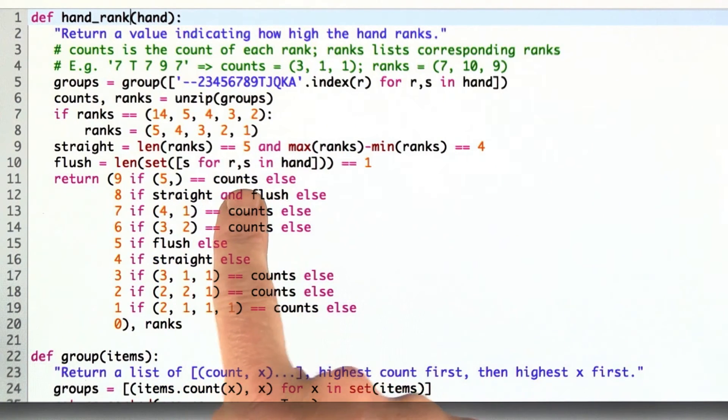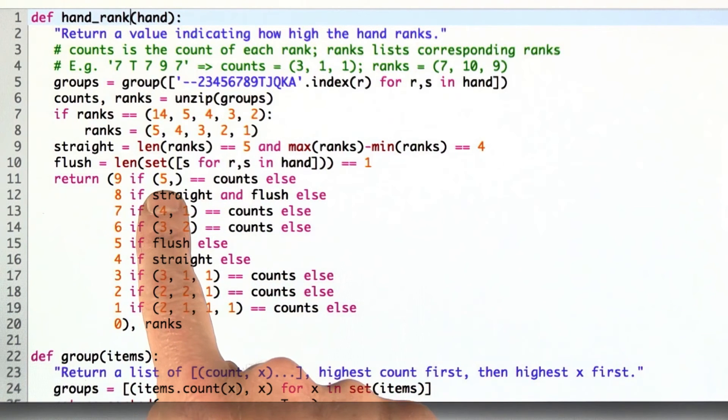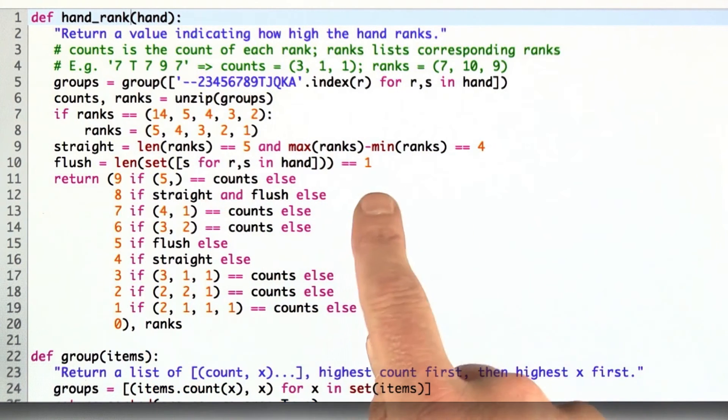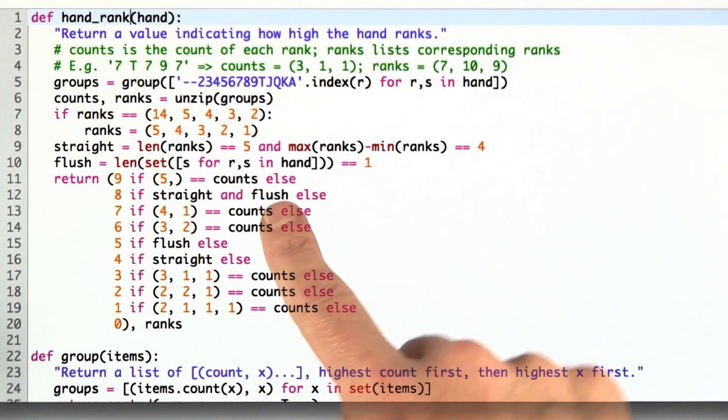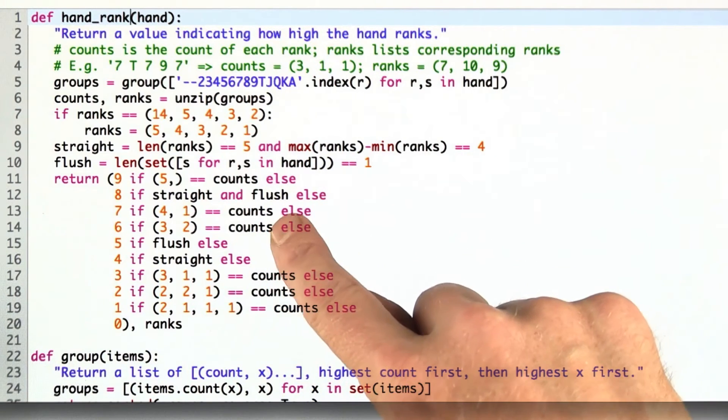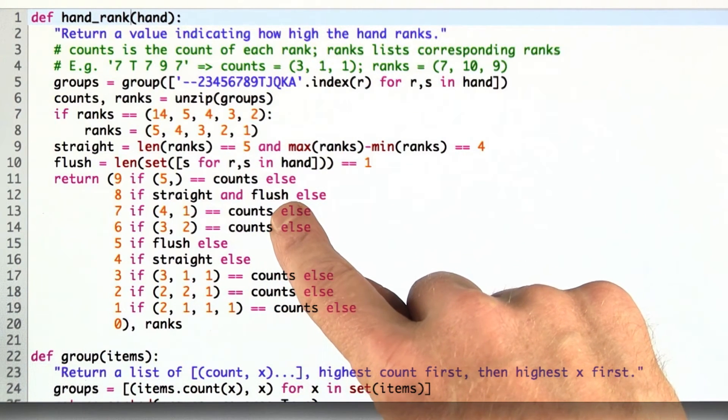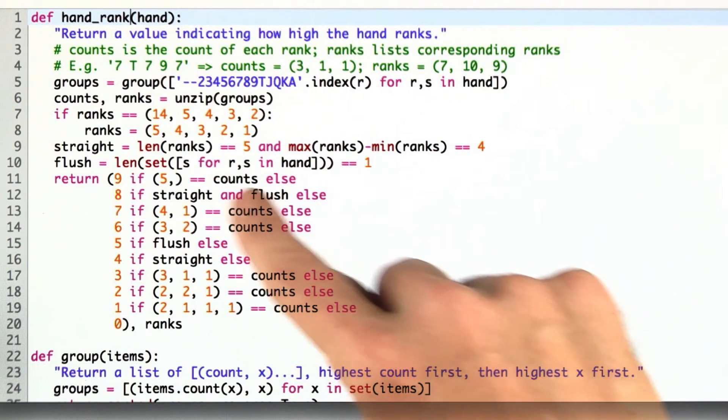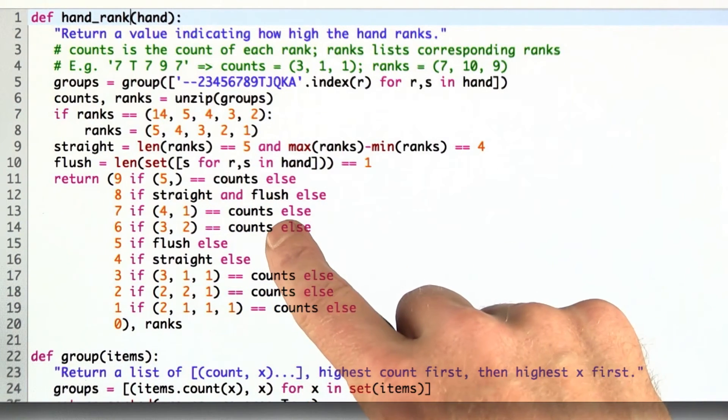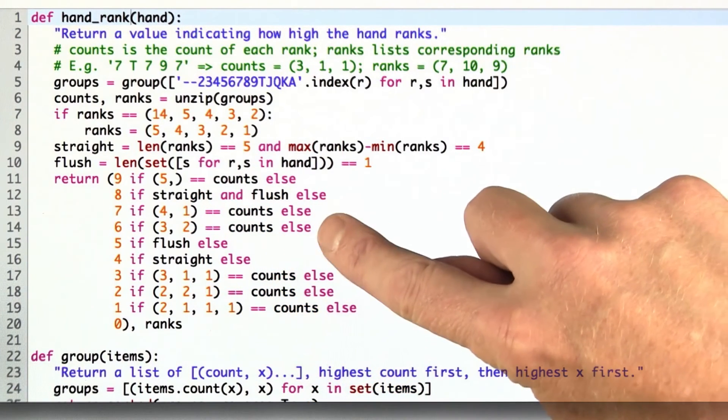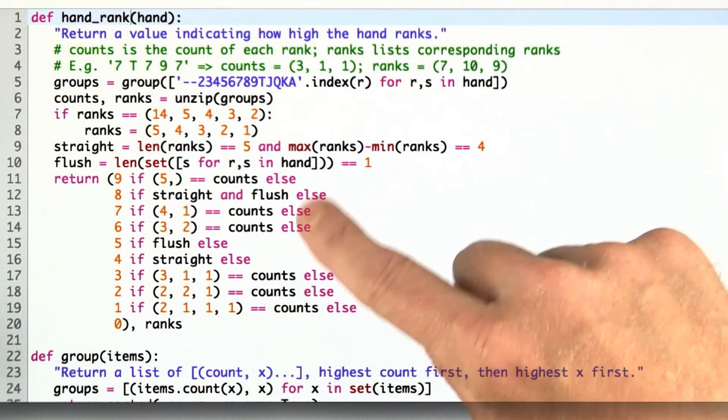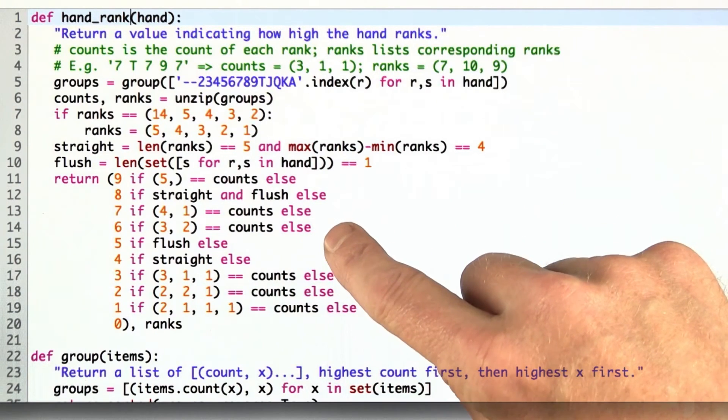What we do is we go through and we say, what are the counts? If the counts are just 5 of a kind, that's the highest. Otherwise, we check for straight and flush like we did before. Otherwise, 4 of a kind. The only way we can have 4 of a kind is if the counts are 4 and 1. Otherwise, we check for a full house. The only way we can have a full house is if the counts are 3 and 2. Then we look for flush and straight. Those are next in order.